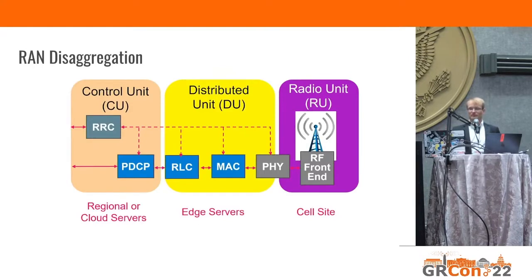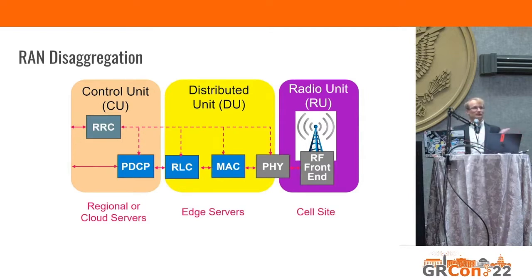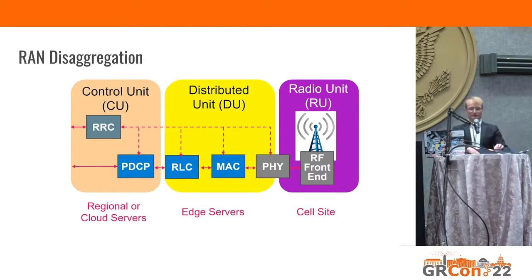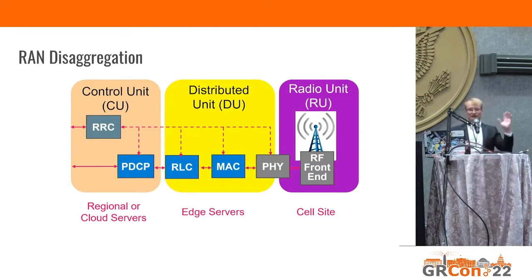RAN stands for radio access network. The idea is to have the different parts of a base station disaggregated. You have the RF part, some lower layer physical layer processing, MAC layer, and other layers. Those can now be disaggregated across sites and locations. We define the radio unit, which has the RF front end and can have some physical layer processing. We have the distributed unit, which can be at the edge, and the control unit that does higher layer control.